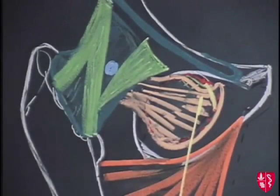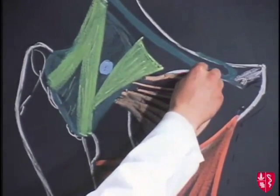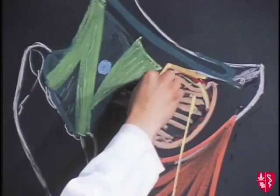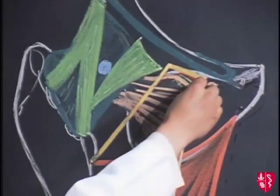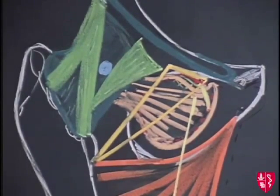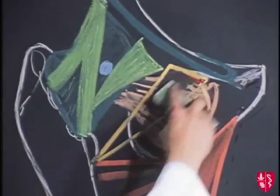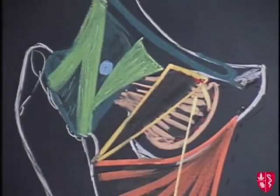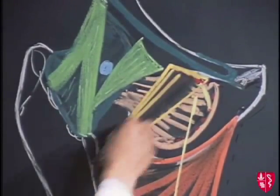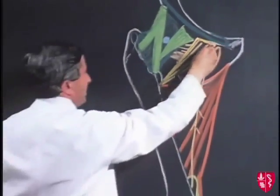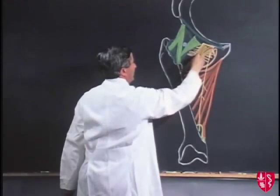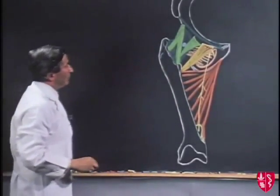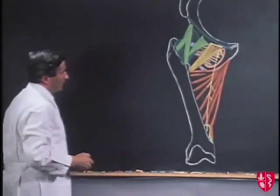The next muscle is the pectineus, attached to the superior ramus of the pubis, passing downwards and laterally to be inserted behind the femur very close to the lesser trochanter. It covers over the obturator externus. From the direction of its fibers it acts as an adductor of the hip joint, and since it's in front of the joint it also has a flexor action. Its nerve supply is usually from the femoral nerve, although it may receive a twig from the anterior division of the obturator nerve.